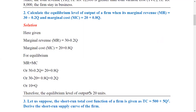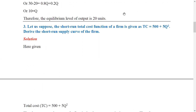So what does this mean? For this business firm, if it produces 10 units of output, profit will be maximized. If it produces fewer than 10 units, profit is not maximized; if it produces more, cost increases and profit falls.